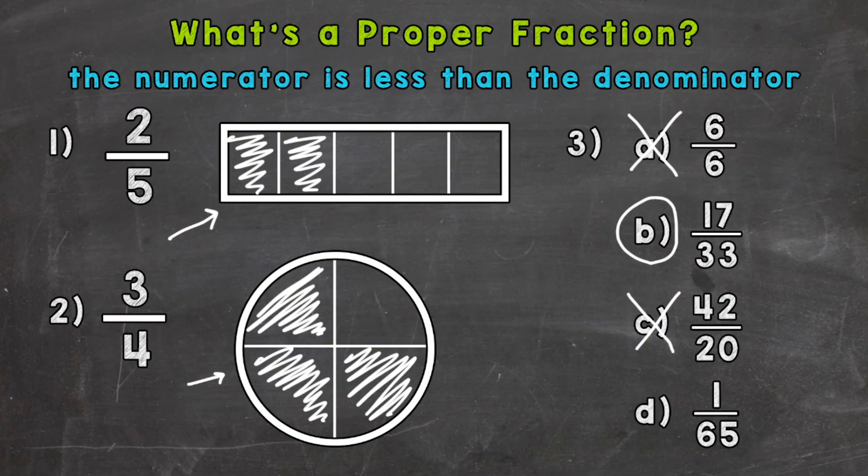And then finally, D, one over 65. So our numerator is less than the denominator. Therefore, we have a proper fraction. And that fraction holds a value less than a whole.